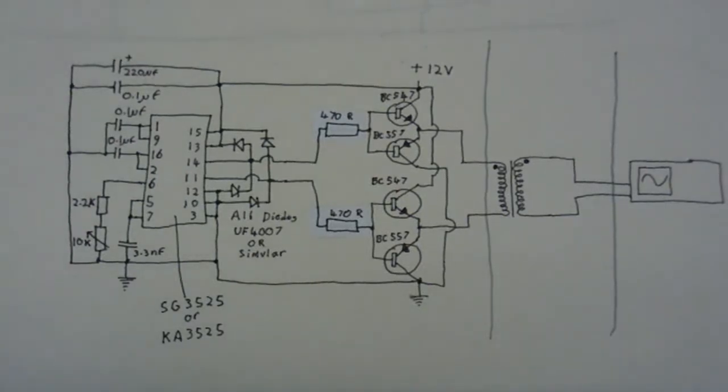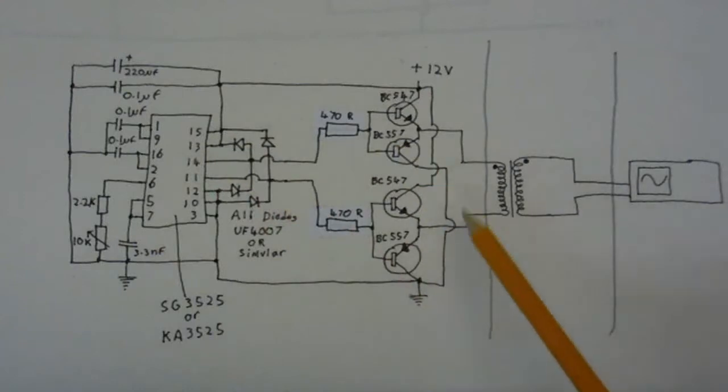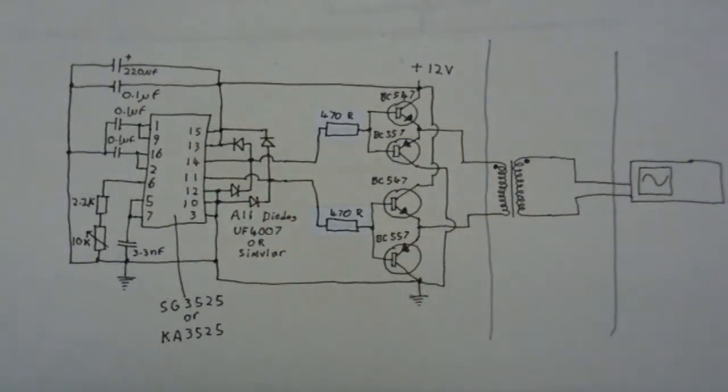And the more observant of you might notice that there is no capacitor between the output of the oscillator and the transformer. That's because, like I said before, this whole circuit gives AC output so there is really no need for a capacitor. Anyway, that's enough waffling on about that. So, let's build a couple of gate drive transformers and see how good they work.